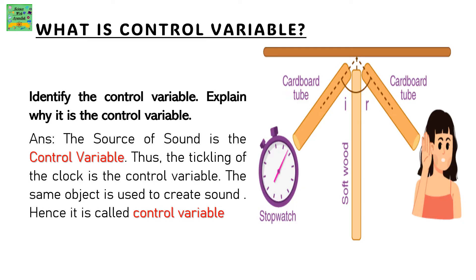Questions. Identify the control variable in the given picture and explain why it is the control variable. In the picture, there is a stopwatch connected with a cardboard tube to a softwood, and another cardboard tube is also attached to the softwood and kept near the girl's ears. The control variable is the source of sound — the stopwatch — because it is the same object used to create the sound.